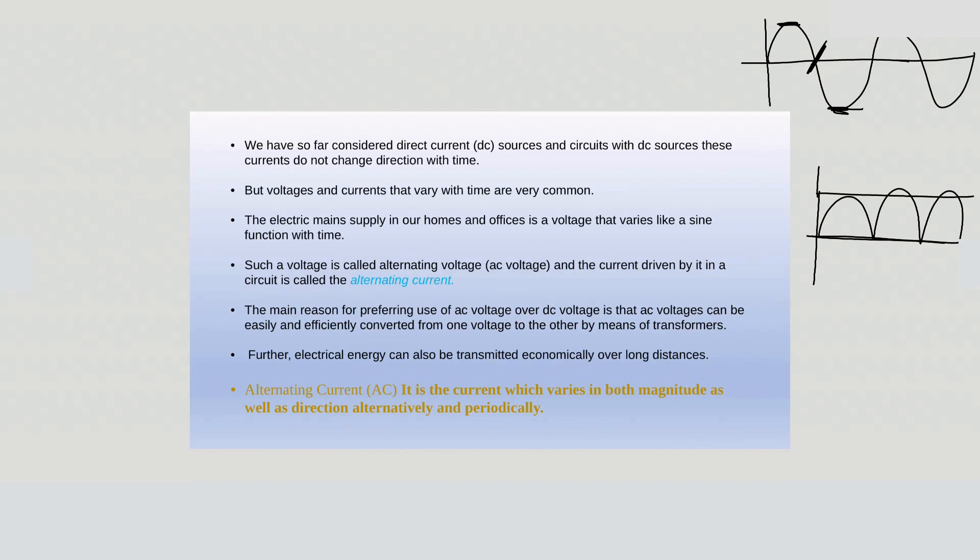As we all know that the magnitude and the direction would change periodically in alternating current, it gives us an average value of current equal to zero, since the positive cycle would be cancelled by the negative cycle. So the average value over a period of time T would always be zero.